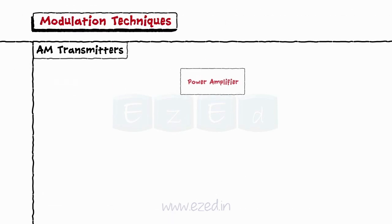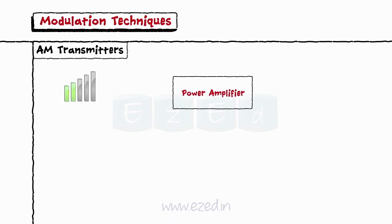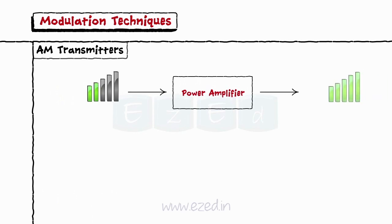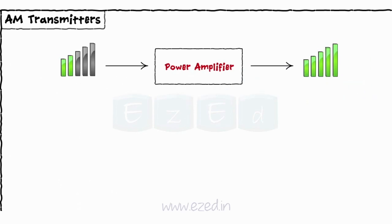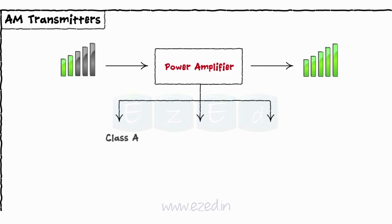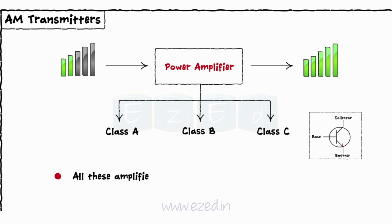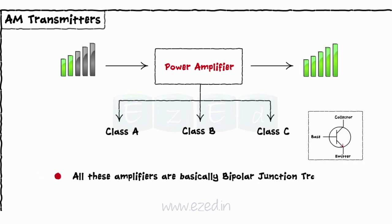Power amplifiers are primarily used to increase the signal strength before its transmission. We have three major power amplifiers: class A, class B, and class C power amplifier, which differ in their efficiency. All these amplifiers are basically bipolar junction transistors.